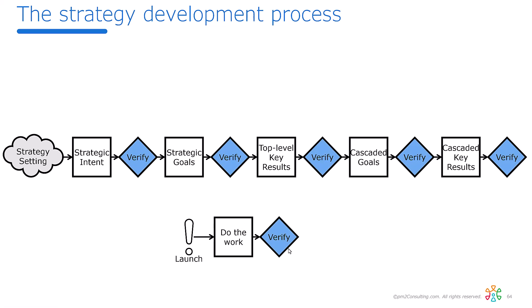Wouldn't it be brilliant if we had one standard approach for doing this verification? Which we do, of course — that's all about OKRs. If you use OKRs, the strategic intent is described as objectives. At each level, we have objectives and key results. Whenever you validate it, you've got the same practice. It doesn't matter whether you're validating the top level or the bottom level — you know how to do it, and you don't have to train yourself differently on each level.